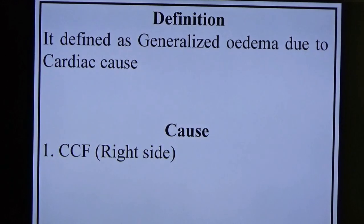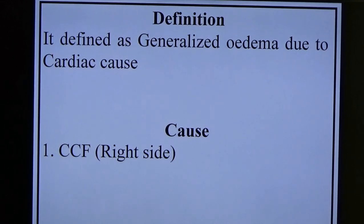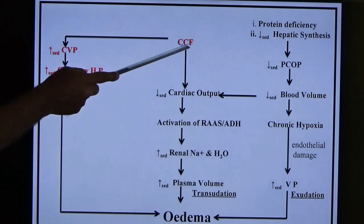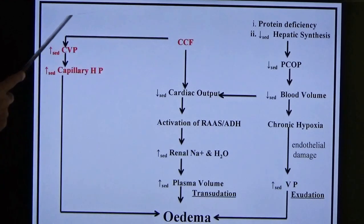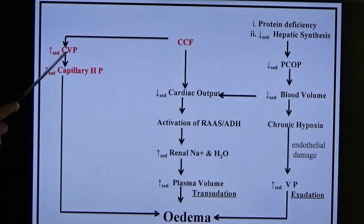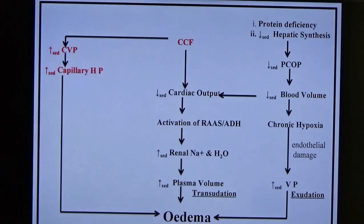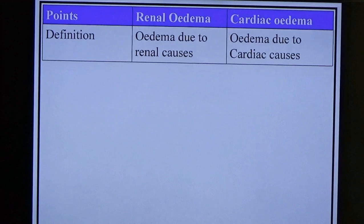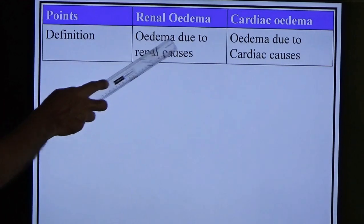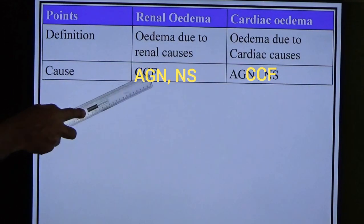Cardiac edema: generalized edema due to cardiac causes, e.g., congestive cardiac failure (CCF). The failing heart pump causes fluid to accumulate in the venous system, increasing central venous pressure, raising hydrostatic pressure, causing edema. Comparing renal and cardiac edema: renal edema is due to renal causes (nephrotic syndrome, glomerulonephritis); cardiac edema is due to cardiac causes (CCF).